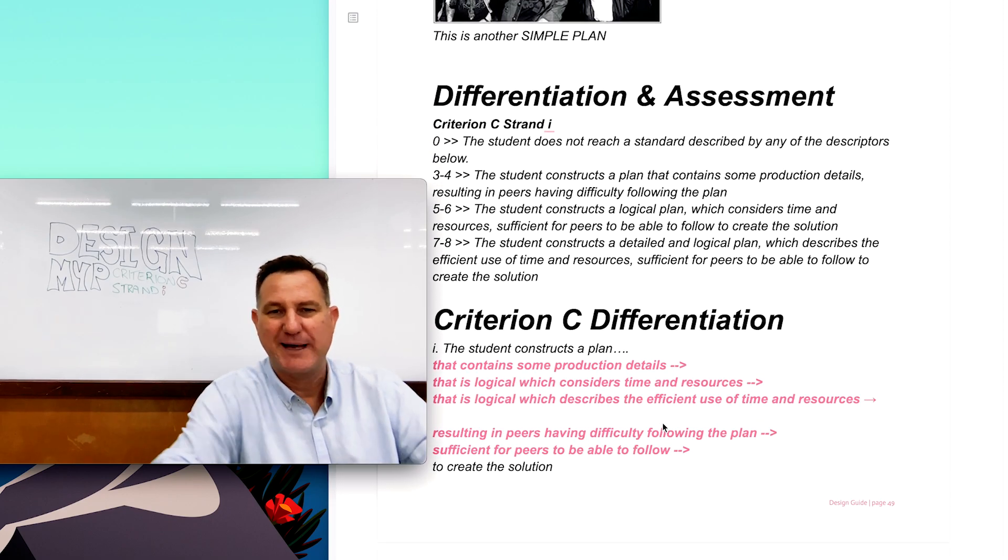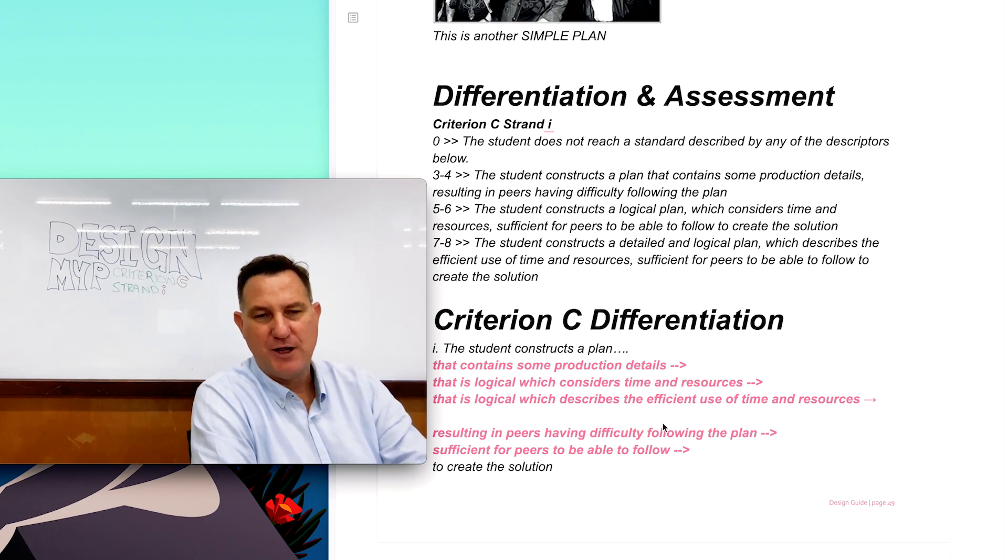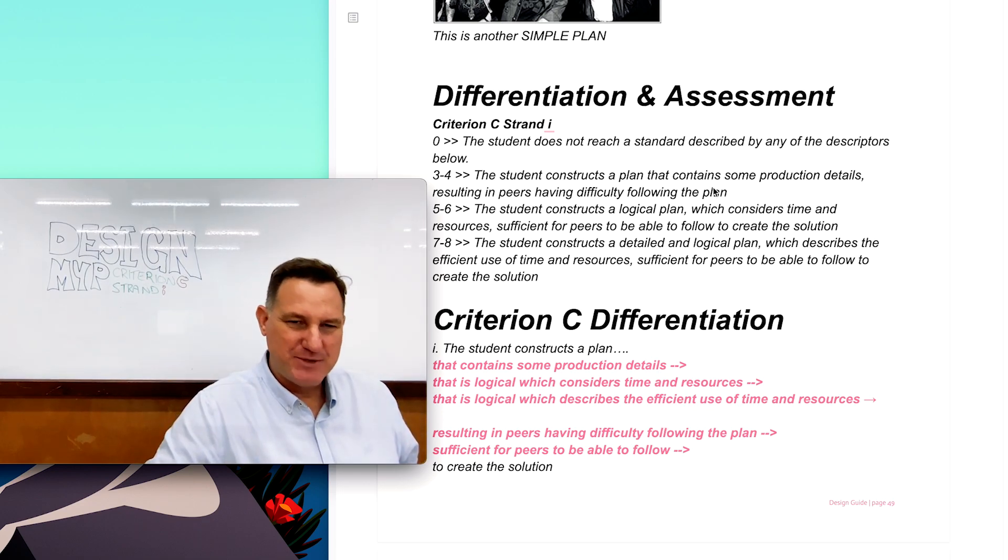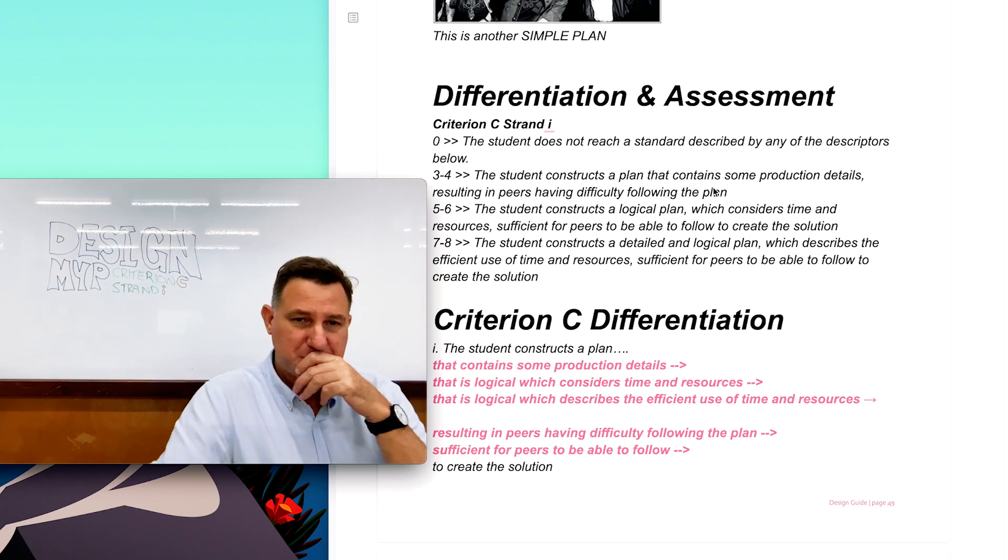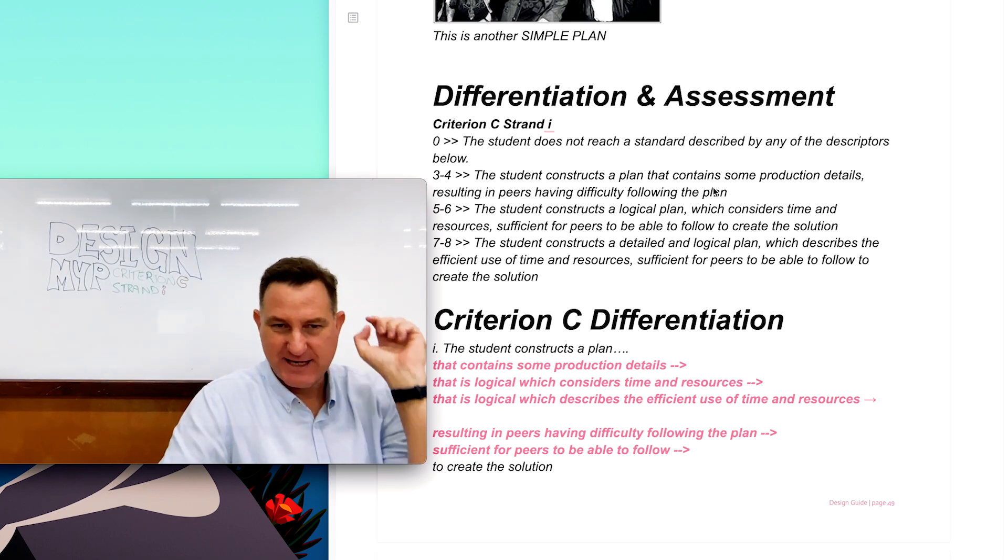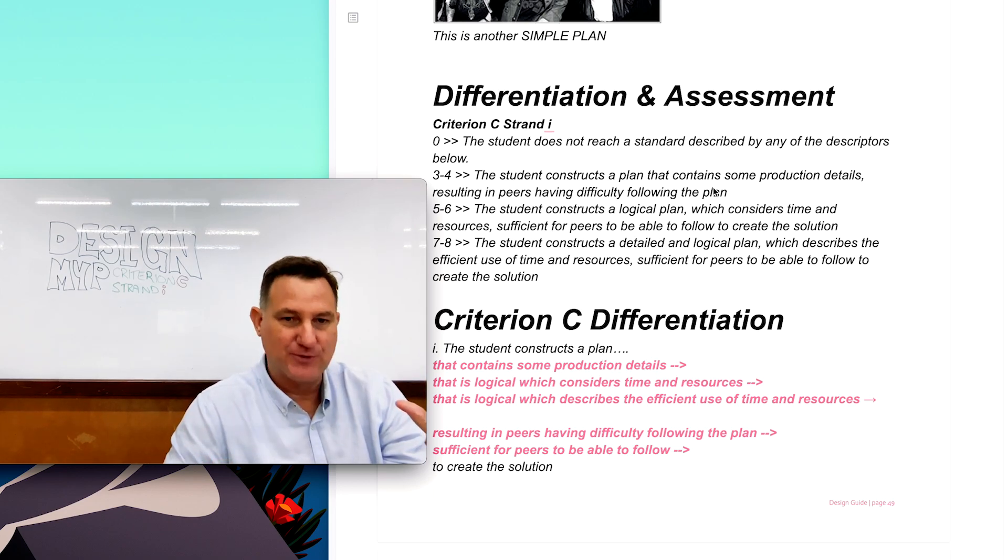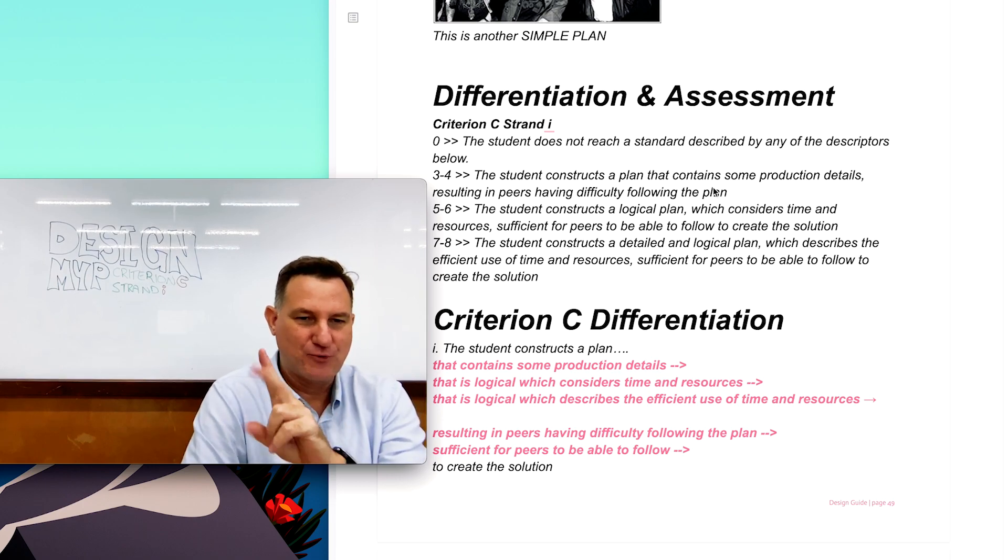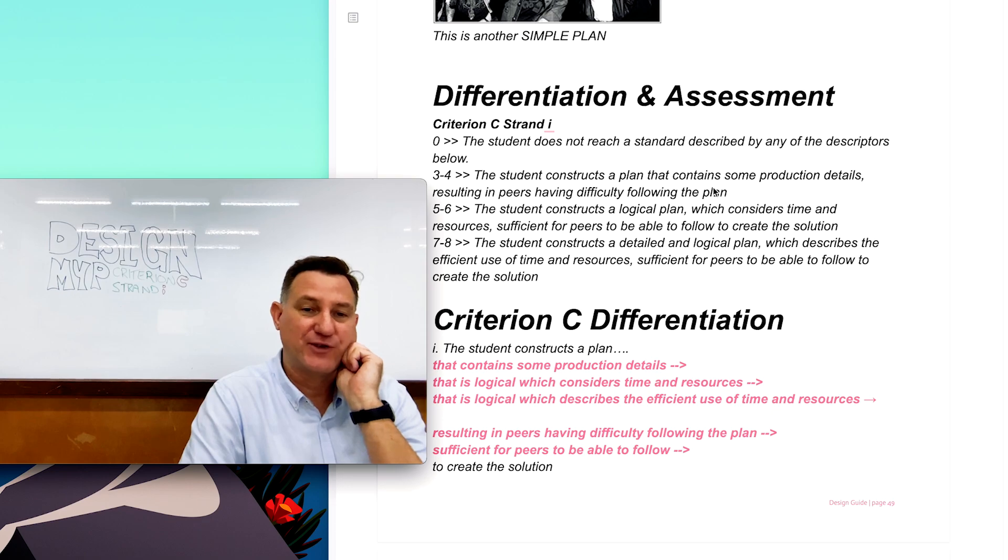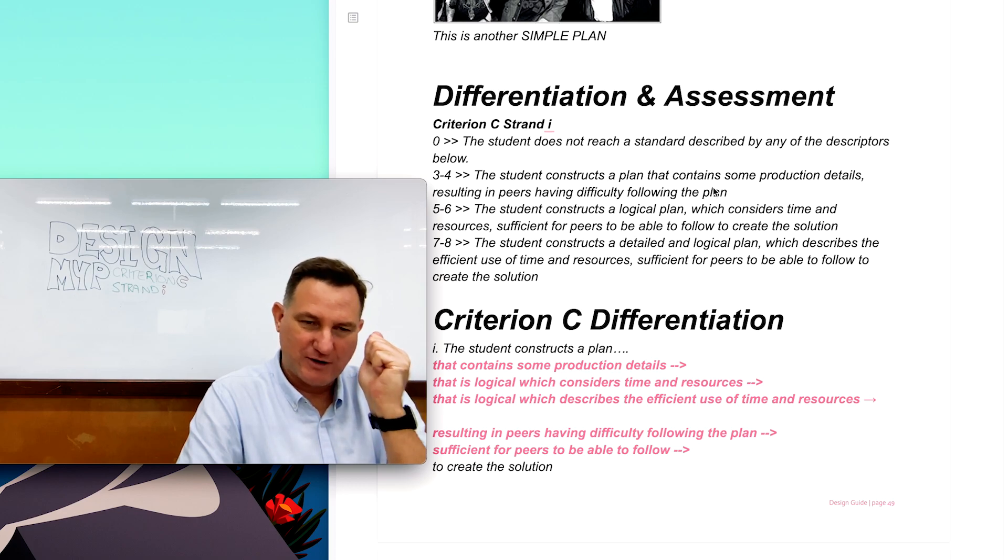So when your teacher is assessing your work, some of the things they're looking at. If you've constructed a plan that contains some details, but people have trouble following the plan, you'll get a maximum score of four out of eight. But if you construct a plan which actually has time, and resources, and somebody else can follow it, you can get a score of six. But if you want to get a score of eight, it needs to be a detailed plan. So add as many details as you can. It also needs efficient use of references to time and resources. So go into detail there as well. And of course, peers can read it and follow along.